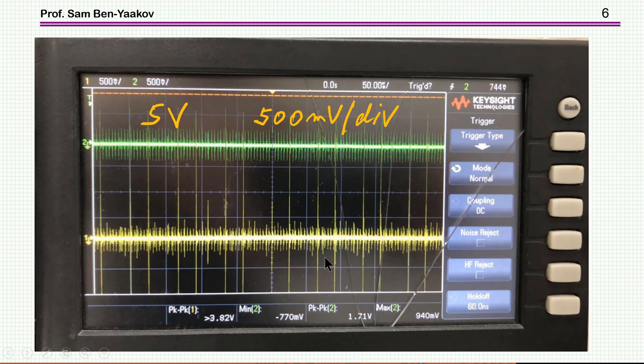This is another area in the board which is not relevant here. This is the output, the 5 volt output of the DC-DC converter. Very, very noisy, spiky.